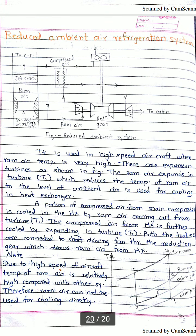The reduced ambient air refrigeration system is used where the ambient temperature is very high. This system uses one compressor, one heat exchanger, and two turbines. The two turbines are driven by a reduction gearbox to enable proper operation.